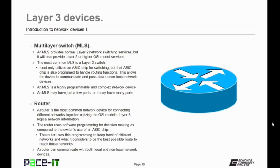Now let's move on to the router. A router is the most common network device for connecting different networks together, utilizing the OSI model's Layer 3 logical network information. That's what makes a router a Layer 3 device. The router uses software programming for decision-making, as compared to the switch's use of an ASIC chip. The router uses this programming to keep track of different networks and what it considers to be the best possible route to reach those networks. A router can communicate with both local and non-local network devices. In most cases, a router will have fewer ports than a switch.